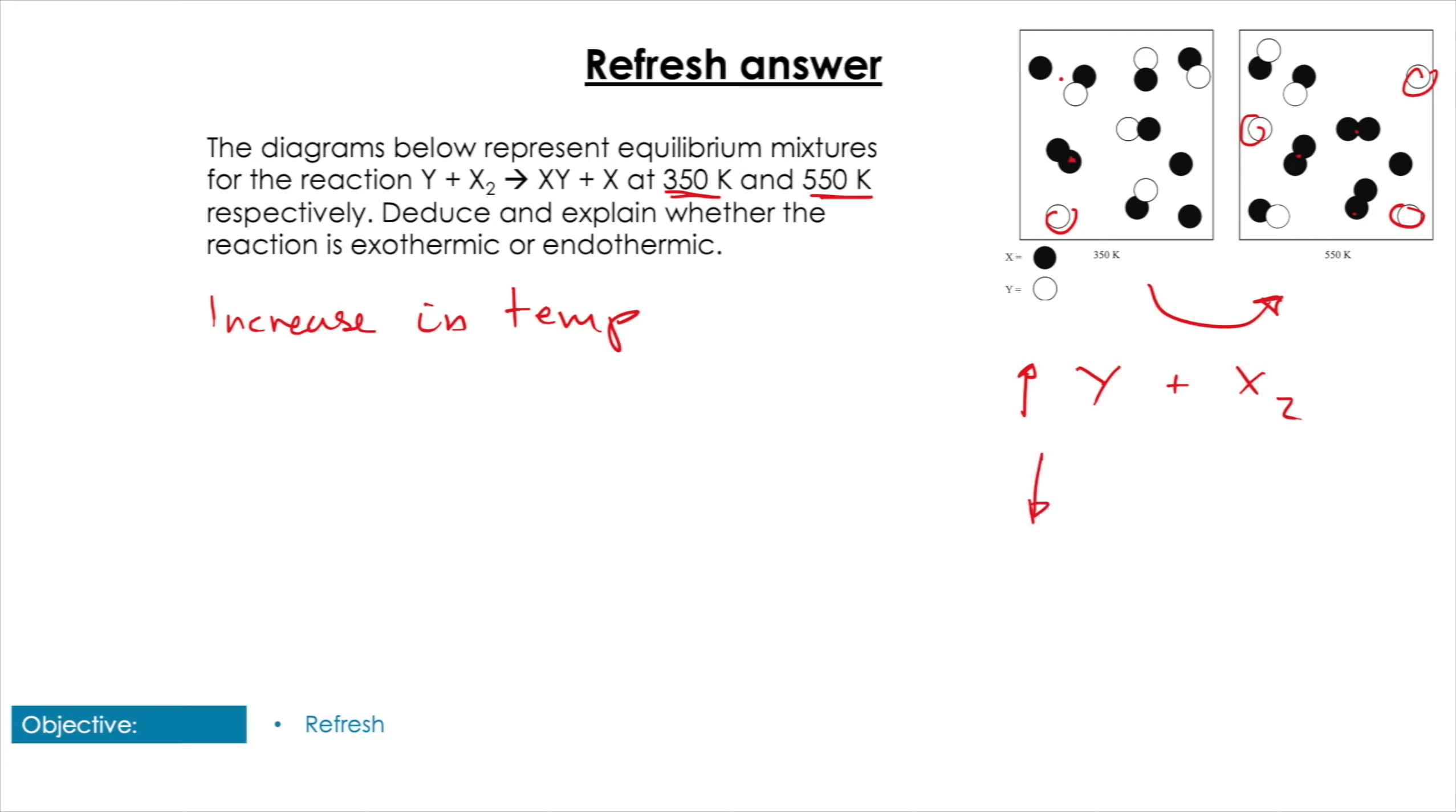Well, it tells us that as we increase temperature, we increase the proportion of Y and we also increase the proportion of X2, and we see a decrease in XY. As we've increased the temperature, we can see we're increasing the proportion of the reactants and decreasing the proportion of the products. What does this mean? Well, we've increased the temperature and that caused a shift to the left-hand side, so that reaction must be endothermic. And because of that, that means the forward reaction from left to right must be an exothermic reaction.